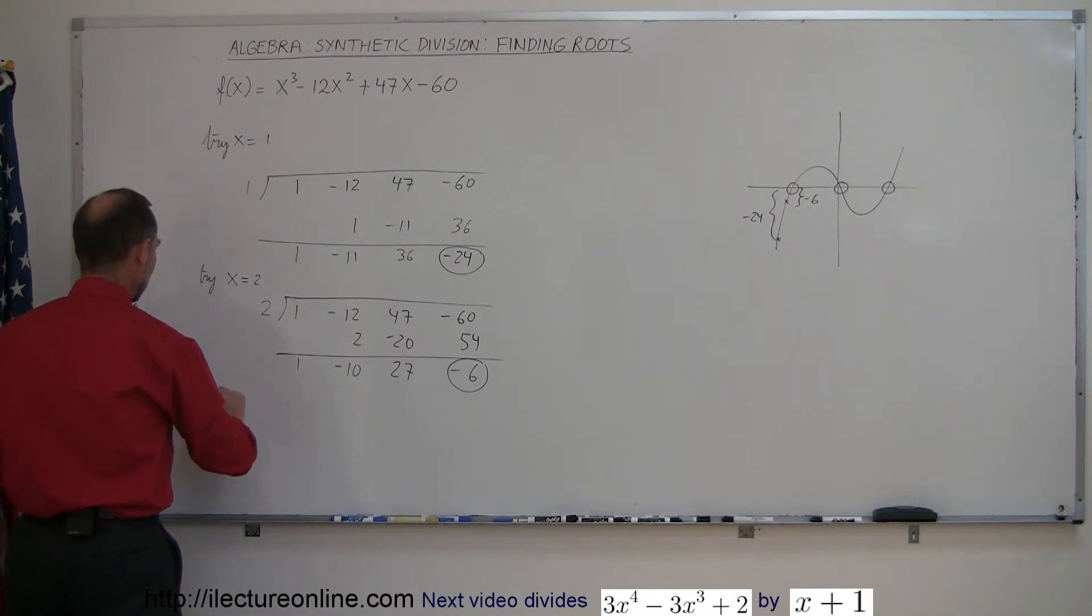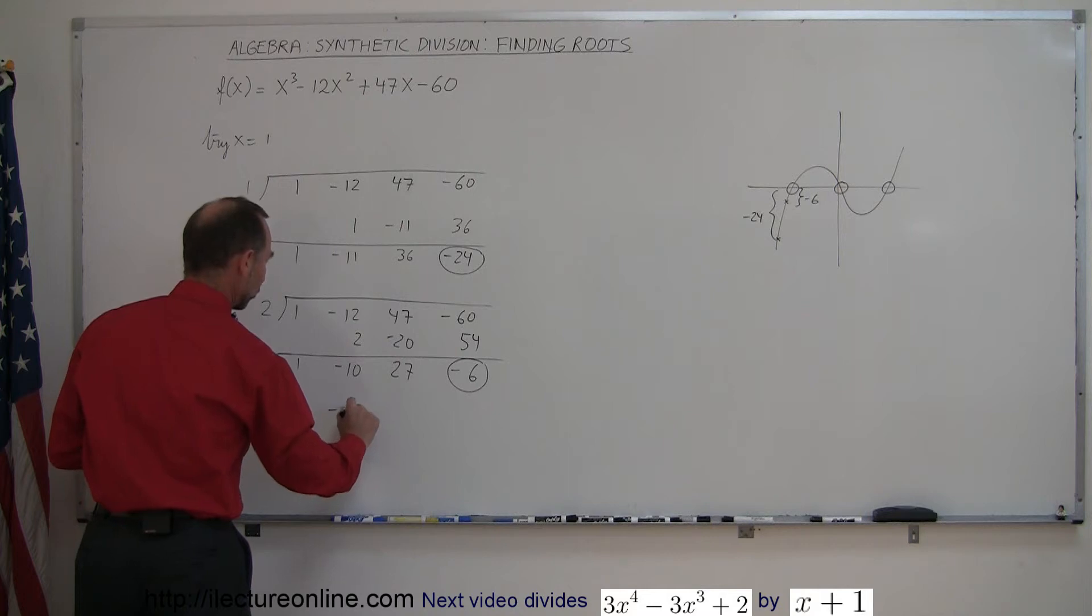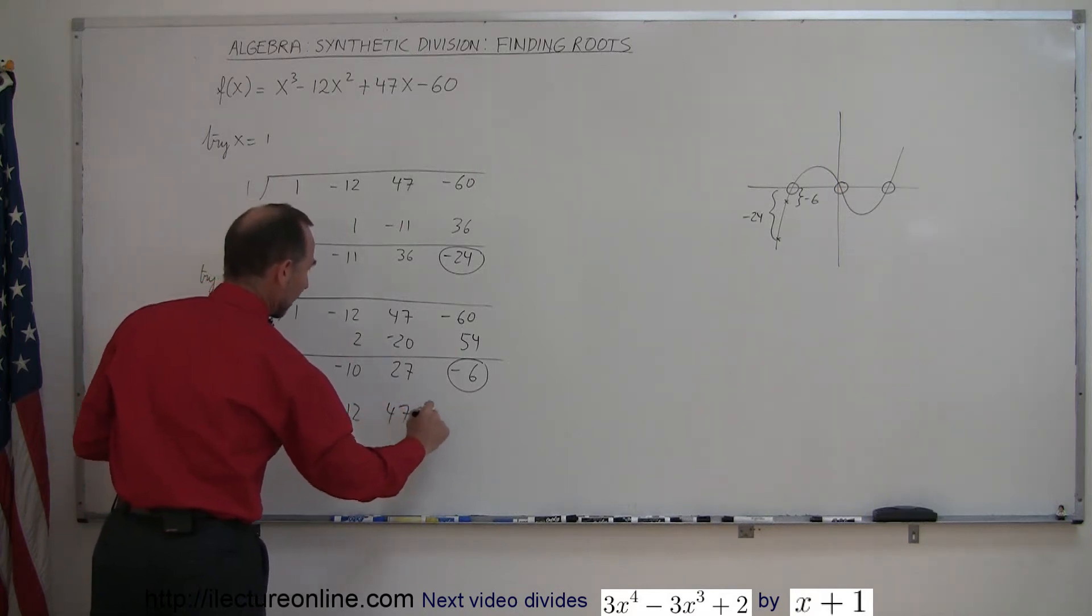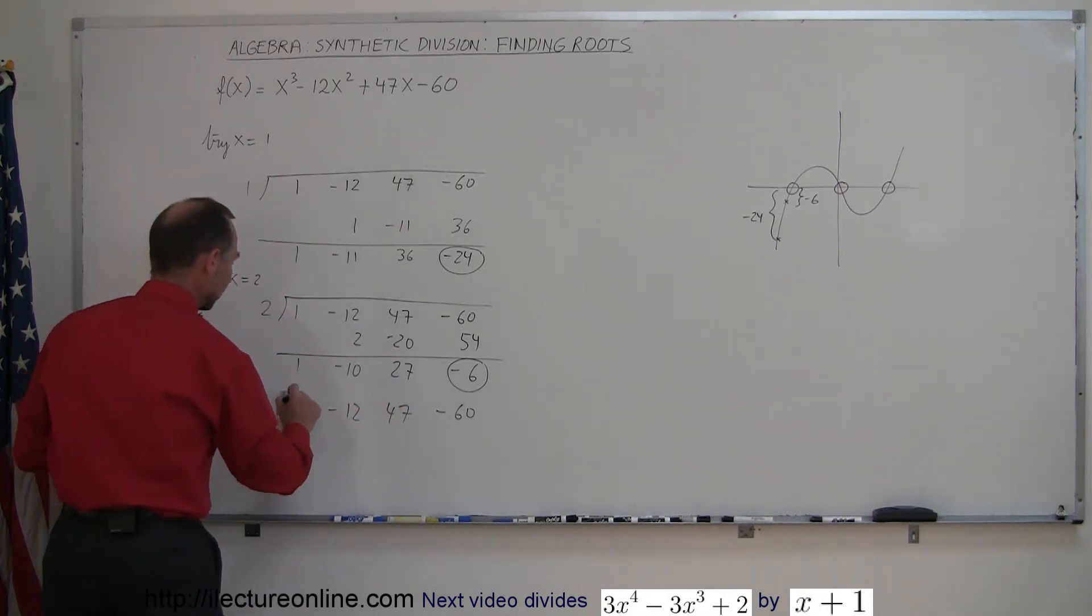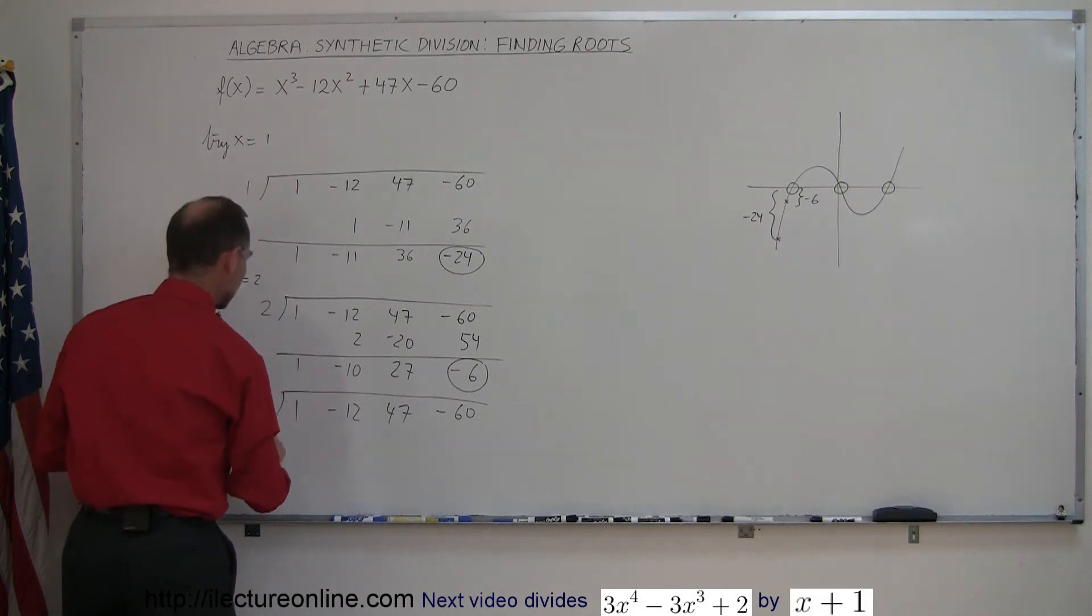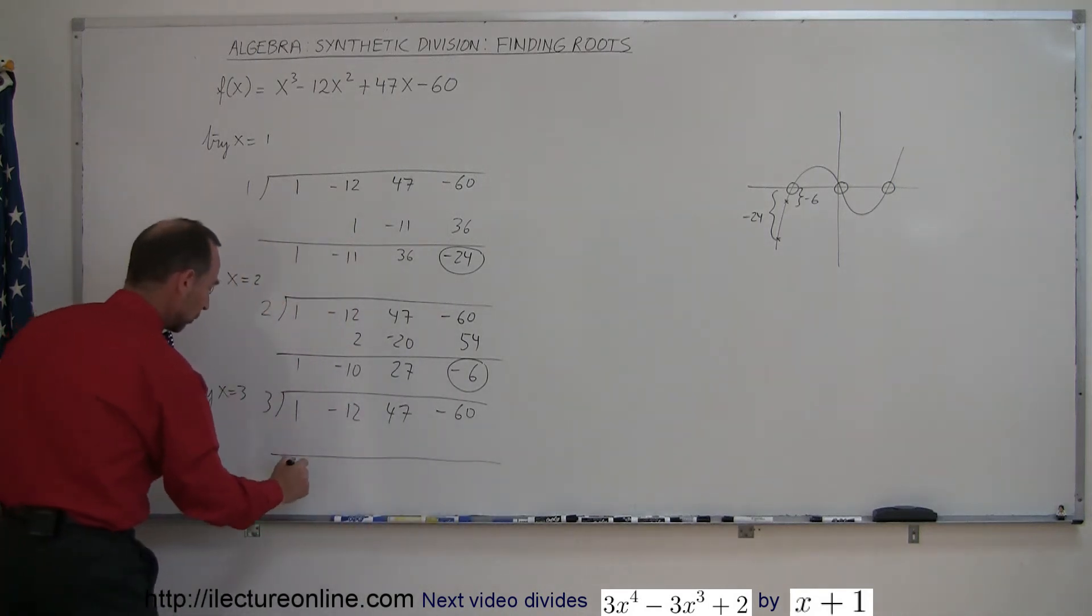We're going to try x equals 3. Again, we put on our coefficients: 1 minus 12, 47, minus 60. Our division symbol, the presumed root, put the line down here. First thing we do is drop the 1.